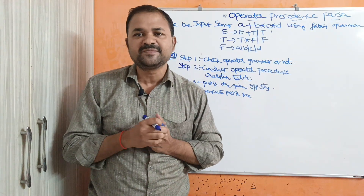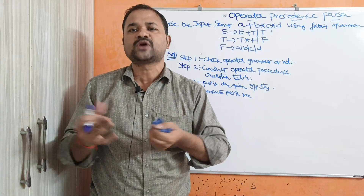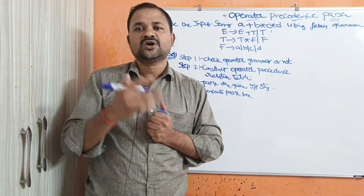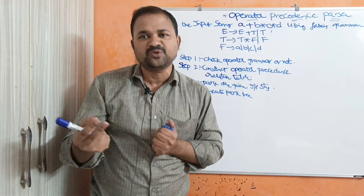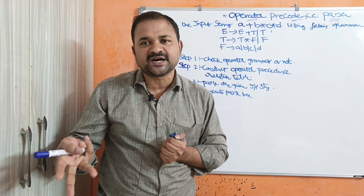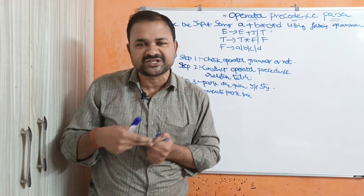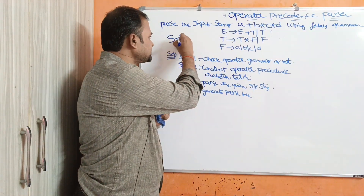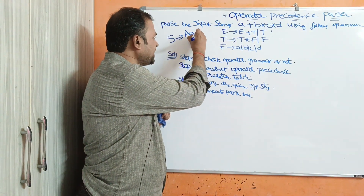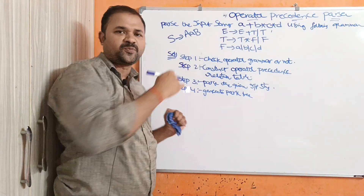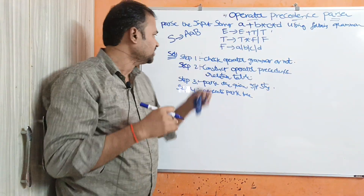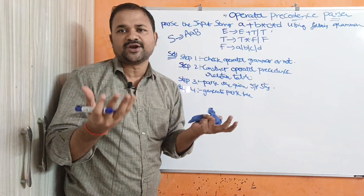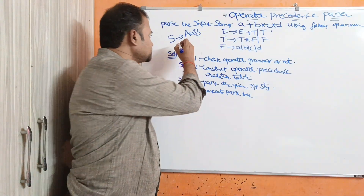Operator grammar must satisfy two constraints. The first constraint is two adjacent variables cannot be placed on the right hand side of a production. For example, S implies A comma A comma B — there is no problem because A and B are not adjacent variables here.